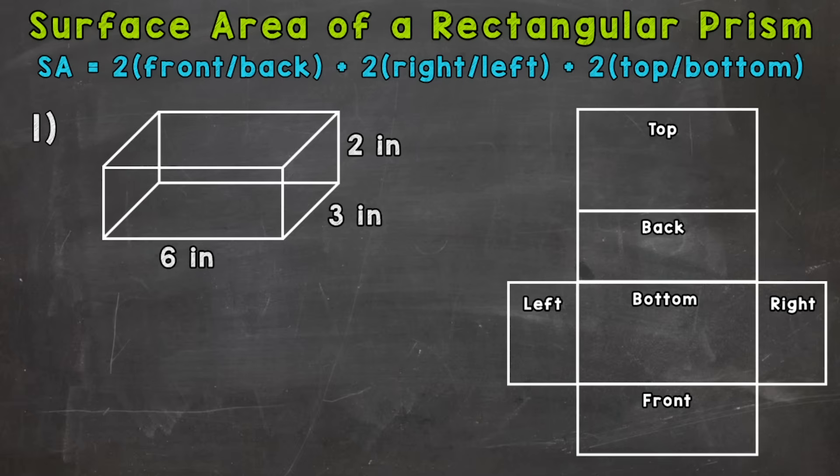So when it comes to rectangular prisms, they have six faces. So we need to find the area of each face and add all of that up in order to get the surface area. Now at the top of your screen in blue,